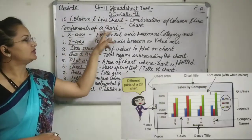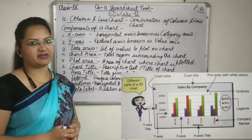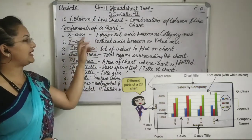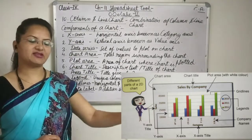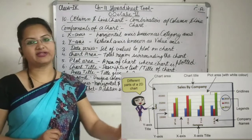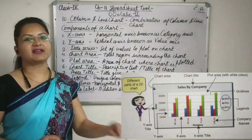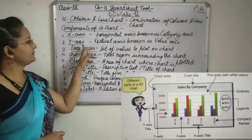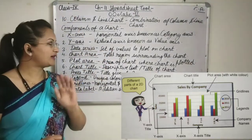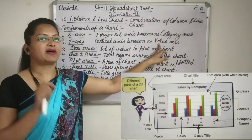Now we will study about various components of the chart. Once the chart has been created, we will be able to see these components in the chart. First of all, x-axis — as the name suggests, you might have seen axes in the graph. It is actually the horizontal axis and it is also known as the category axis. Categories are marked over there. Then y-axis — the vertical axis — is also known as the value axis.